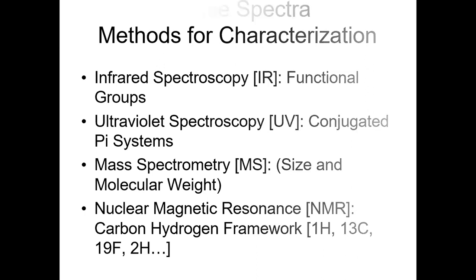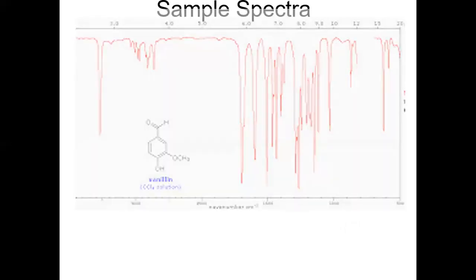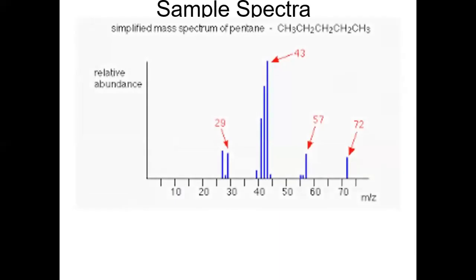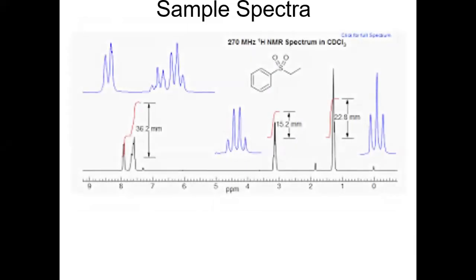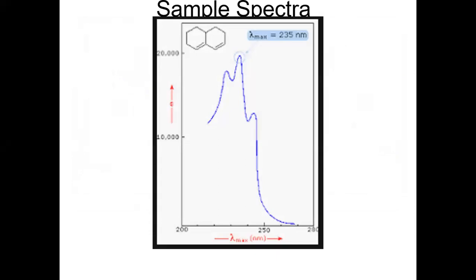We've already seen infrared spectrums - let me skip through that. This is what a mass spectrum would look like from a mass spectrometer. We're going to understand what all of this stuff means: what the numbers mean, what the x-axis is, the y-axis, all of that.